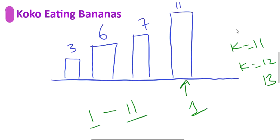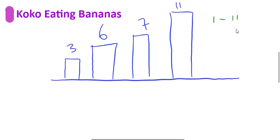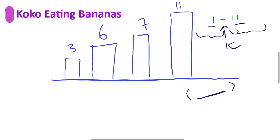As seen in previous videos, once we determine that our output lies within a lower bound and upper bound, we can use binary search. We select a mid value between the lower and upper bound as our k, and design a condition function using the same template from our first video. The condition function checks whether, with eating speed k, Koko can finish all bananas in all piles within h hours.